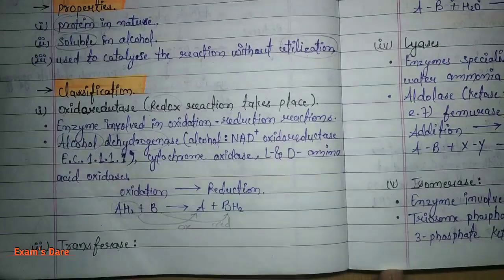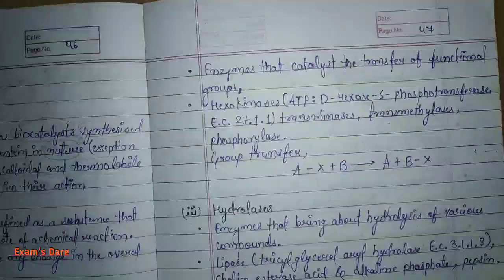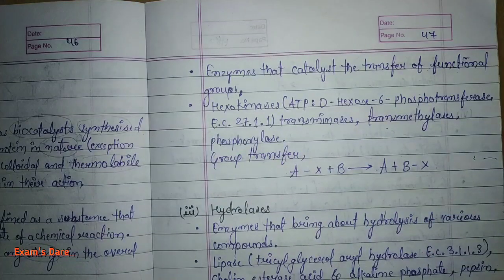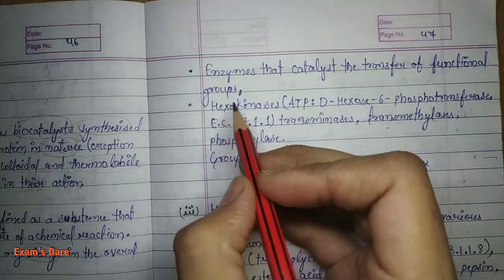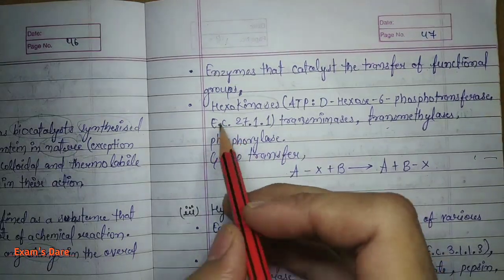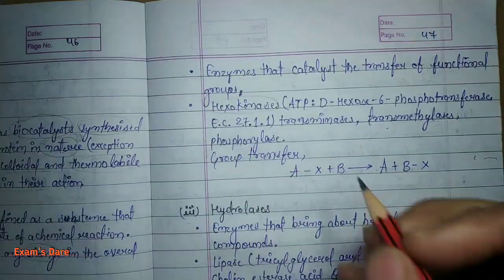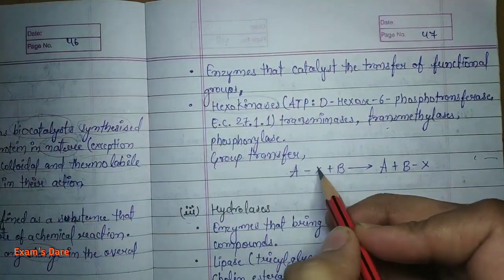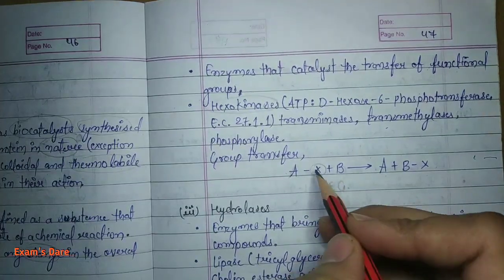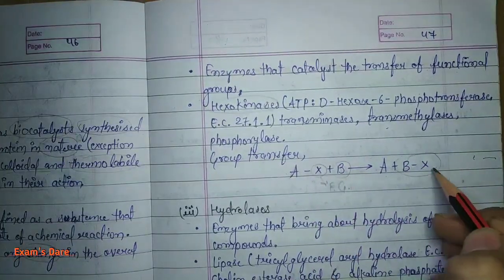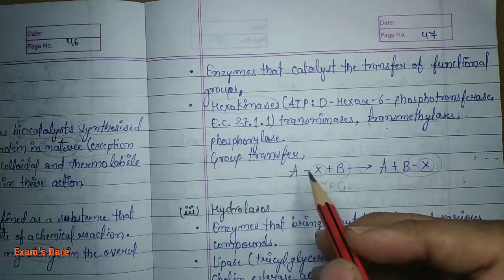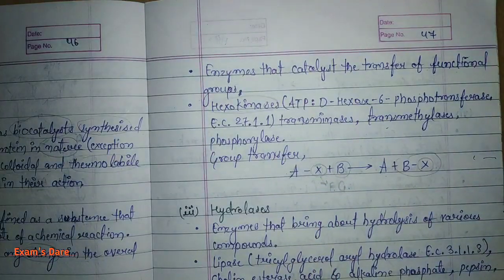Second are Transferase Enzymes — enzymes that catalyze the transfer of a functional group. The enzymes we use in the transfer of a functional group, we call transferase enzymes. Example: hexokinase. For example, a functional group X is attached to compound A. This functional group will transfer to compound B. The functional group is removed from A and transferred to B. Whatever enzymes are utilized for this, we call them transferase enzymes.